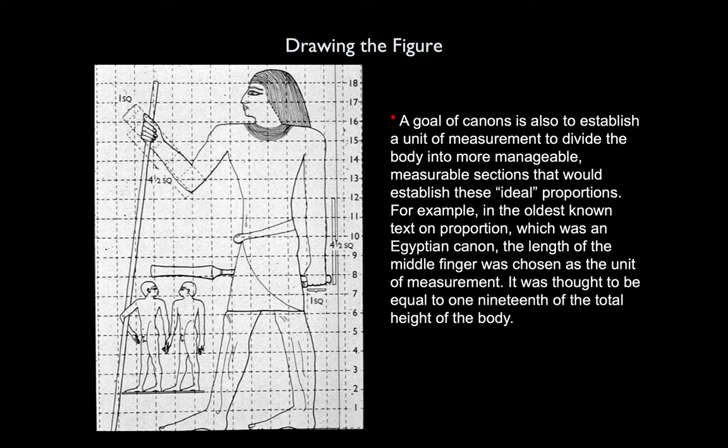During the Old Kingdom, standing figures were represented 18 modules tall, from the soles of the feet to the hairline on the forehead. The navel was located at the 11th module. Heads were represented in profile with a front-facing eye, the torso was pictured facing forward, and the lower body from waist down was also shown in profile. Figures were represented with two left or two right feet.